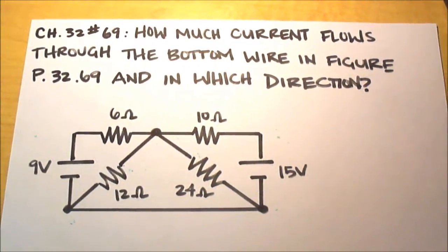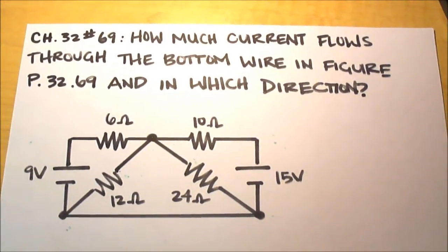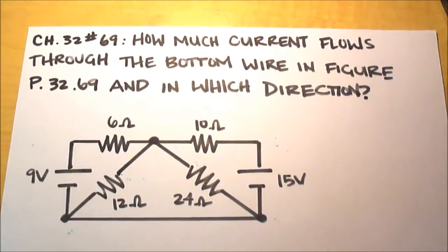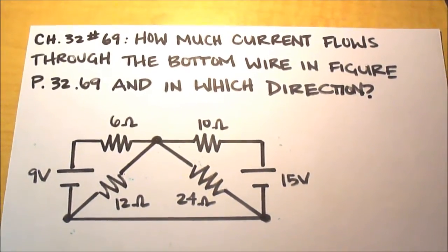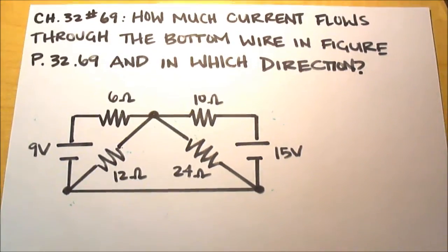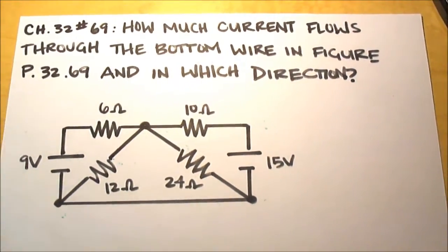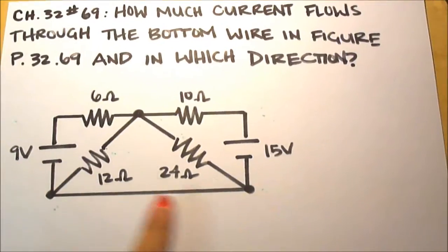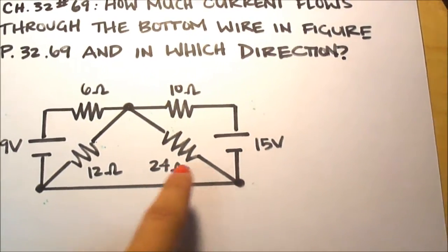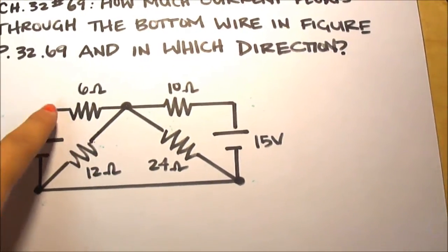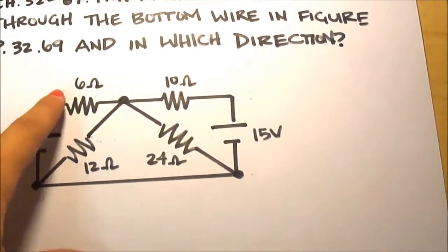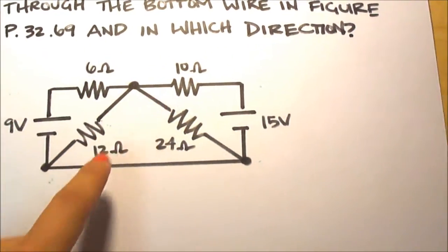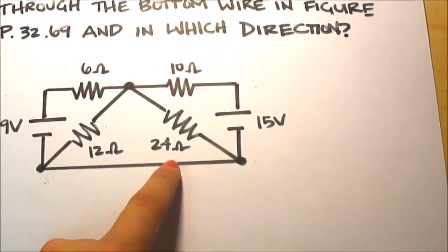Our question asks how much current flows through the bottom wire in figure 32.69 and in which direction? We have a 9 volt battery and a 15 volt battery, and then 4 different resistors all clearly labeled as 6 ohms, 10 ohms, 12 ohms and 24 ohms.